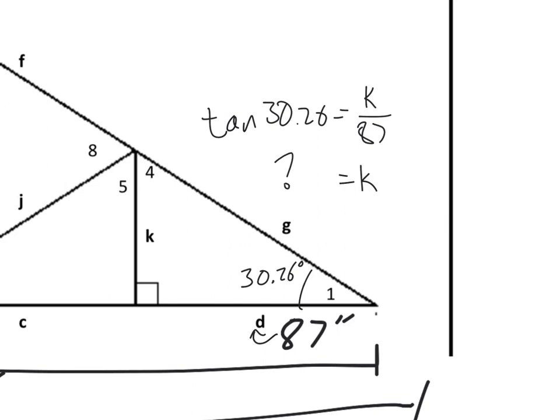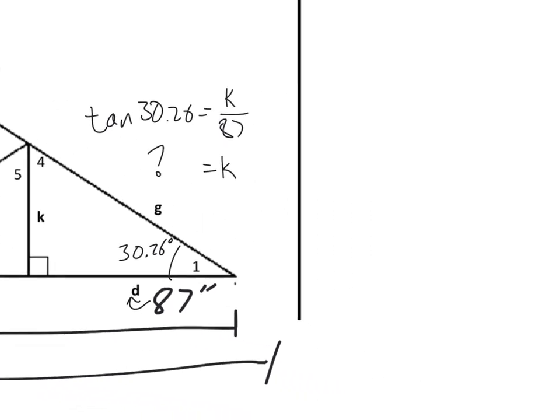And then what if I want to find G? If we want to find G, this is the adjacent to angle 1, and this is the hypotenuse. Adjacent and hypotenuse, well, that's cosine. So we can say the cosine of 30.26 is 87 over G. Now be careful here. You're going to have to cross multiply. You're going to get an answer bigger than 87.